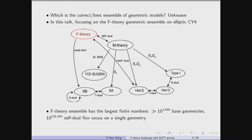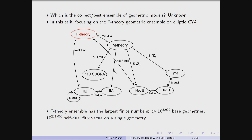A priori, we don't really know which is the most correct or best ensemble of the whole string landscape, because we don't know where our real world lives. However, to start with, you still need to pick a particular corner and really study the geometric ensemble. In this talk, I'm going to focus on the F-theory geometric ensemble on elliptic Calabi-Yau fourfolds that give rise to 4D N=1 supergravity.